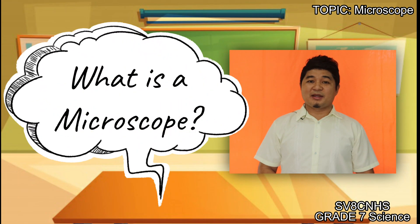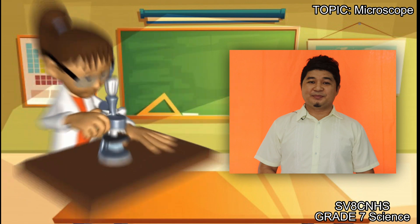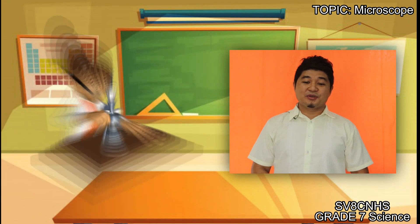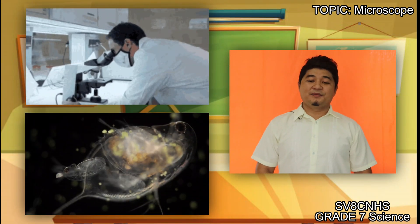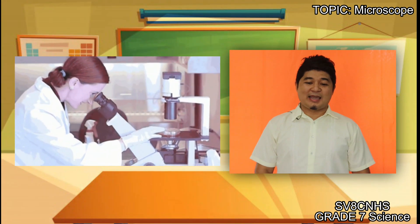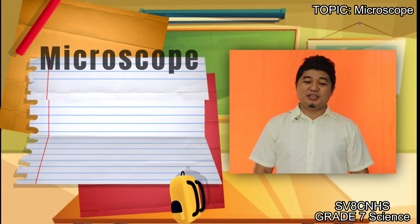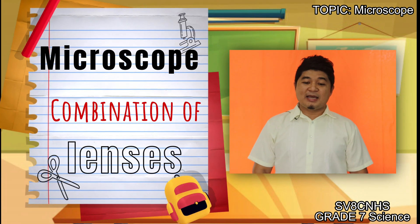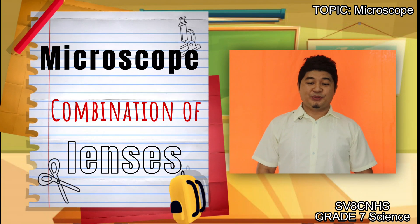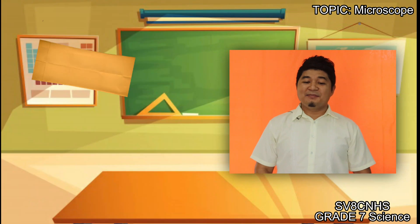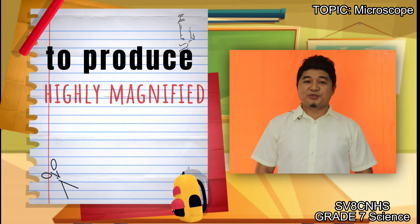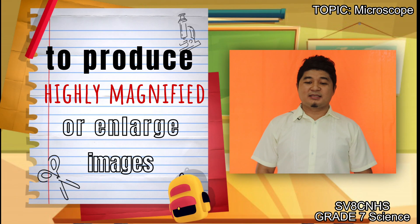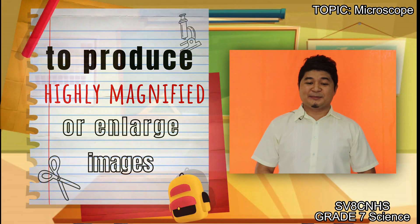But first, what is a microscope? The microscope is an important tool in the study of living things. It contains a lens or combination of lenses to produce highly magnified or enlarged images of small objects or specimens.